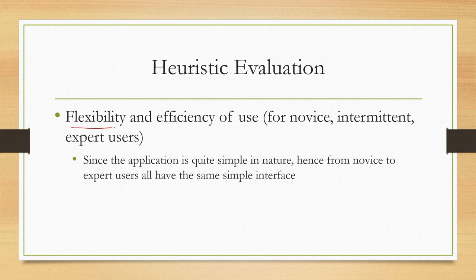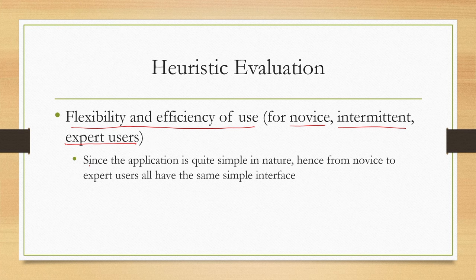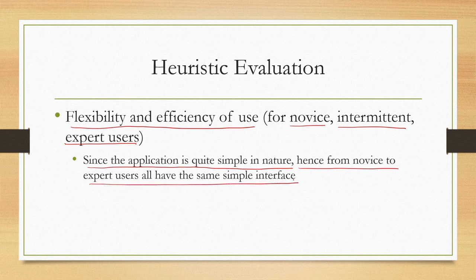The seventh heuristic is flexibility and efficiency of use for different user categories: novice, intermittent and expert users. In this design, since the application is quite simple in nature as perceived by the designer, from novice to expert users all have the same simple interface. So the designer thinks it provides flexibility and efficiency of use.